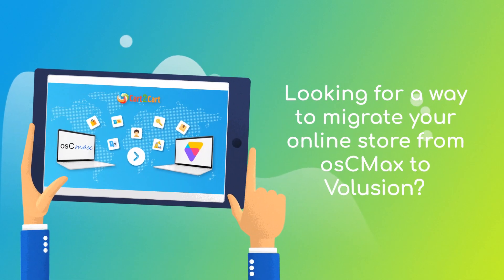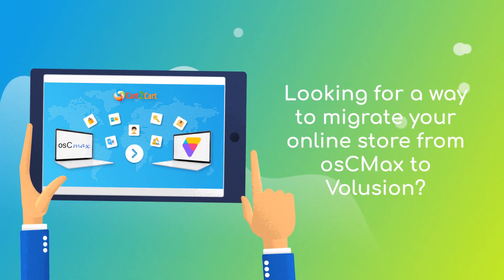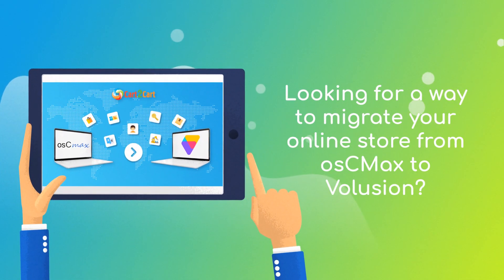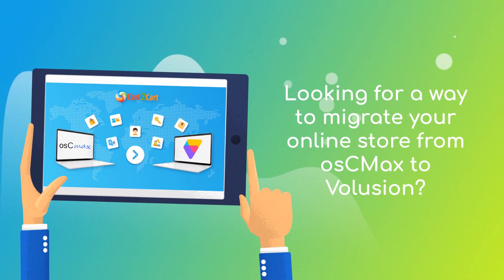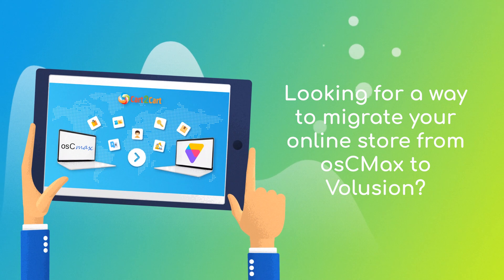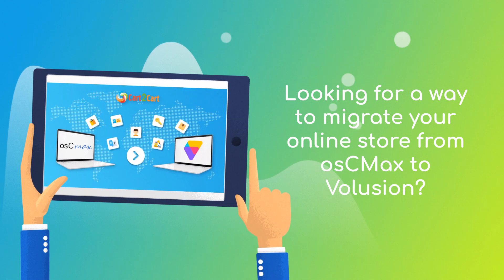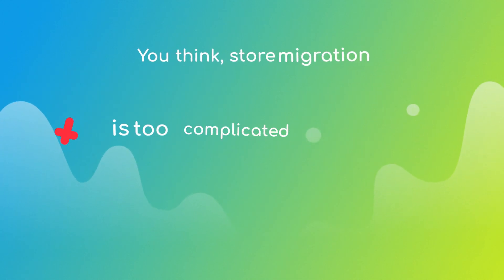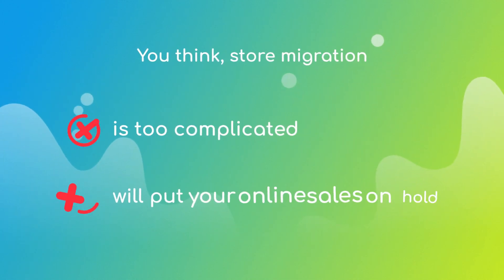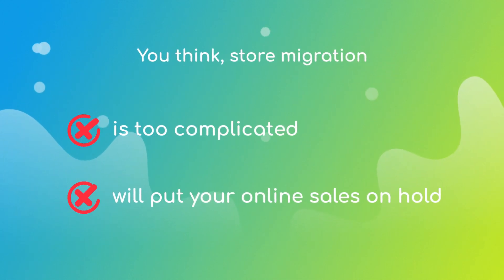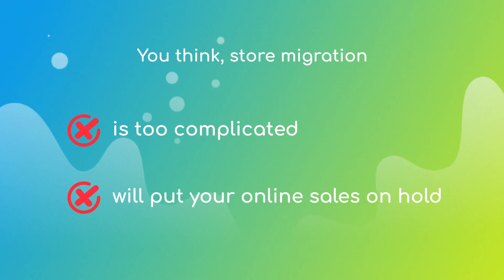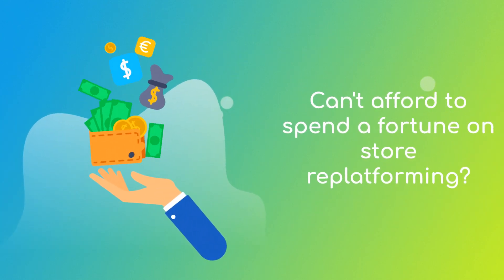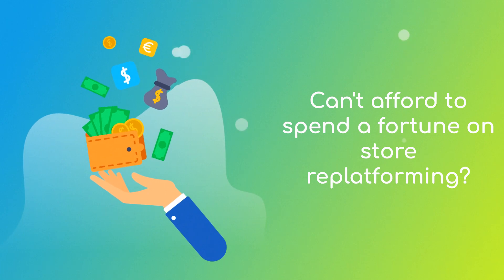Want to switch from OSC Max to Volusion and bring over all your store data like products, customers, orders, and more? But hesitate because you think it's too complicated, don't want to put your online selling on hold, or can't afford to spend a fortune on replatforming?